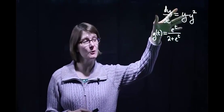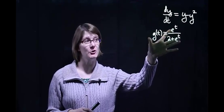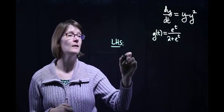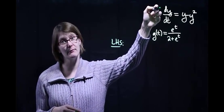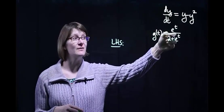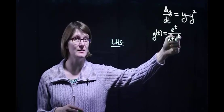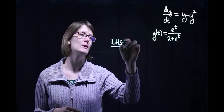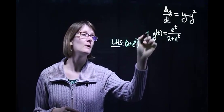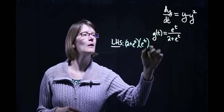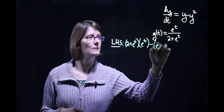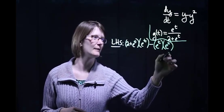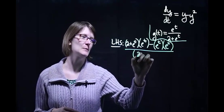We're going to be working with the same differential equation, but here we're going to be looking at a different function. Following the same idea, let's look at the left-hand side, which means we need to take the derivative of our function with respect to t. Looking at this function — it's e to the t over 2 plus e to the t — that is a quotient, so we're going to have to use the quotient rule. That means we take our bottom function times the derivative of our top function, minus our top function times the derivative of our bottom function.